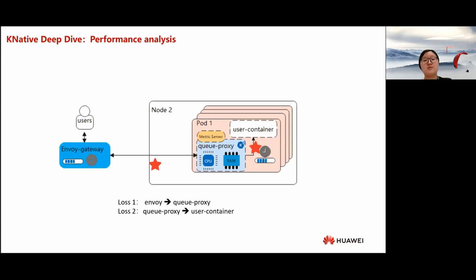Now let's look at the other challenge: performance loss. As shown in the figure, the user sends a request to the gateway, which forwards the request to the Queue-Proxy in the corresponding pod, and then Queue-Proxy forwards the request to the user container in the same pod. Compared with direct access to the user container, the traffic forwarding path in Knative is longer, which brings performance loss. We focus on two performance loss points: the latency from the gateway to Queue-Proxy, and the latency from Queue-Proxy to the user container.